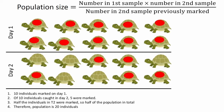So we have 10 turtles that we are catching on day 1. On day 2 we have 10 turtles again. 10 individuals are marked on day 1. So we're going to investigate the population size of turtles. We have caught 10 on our first day and we're going to mark them each with red dots on their back.